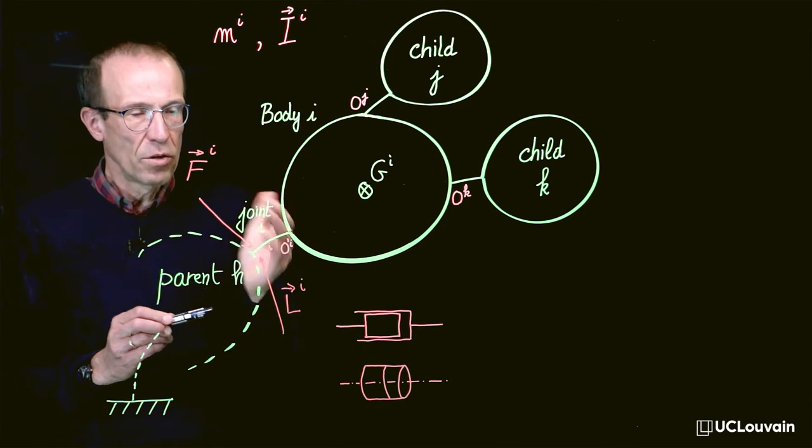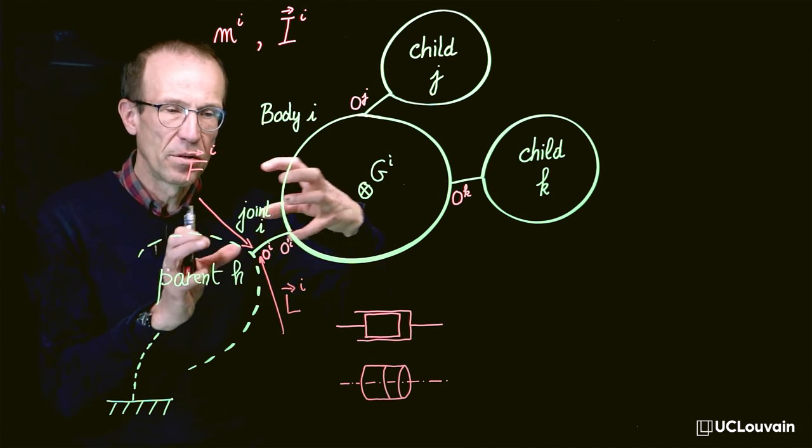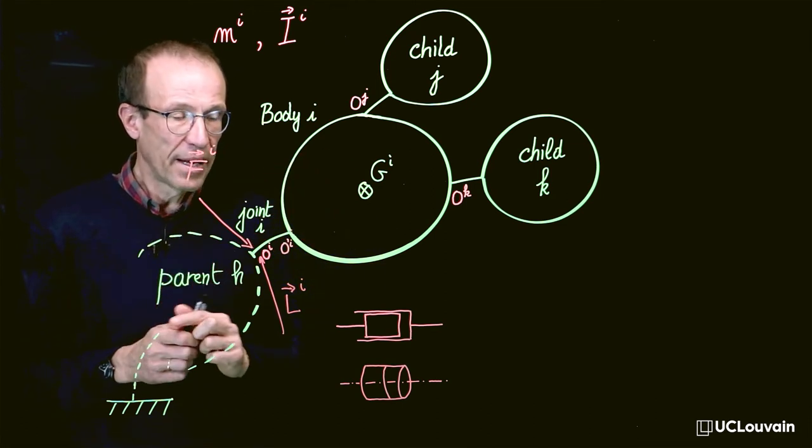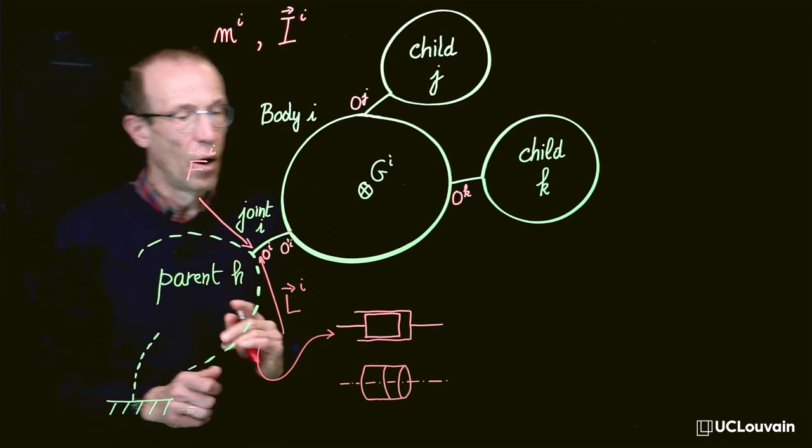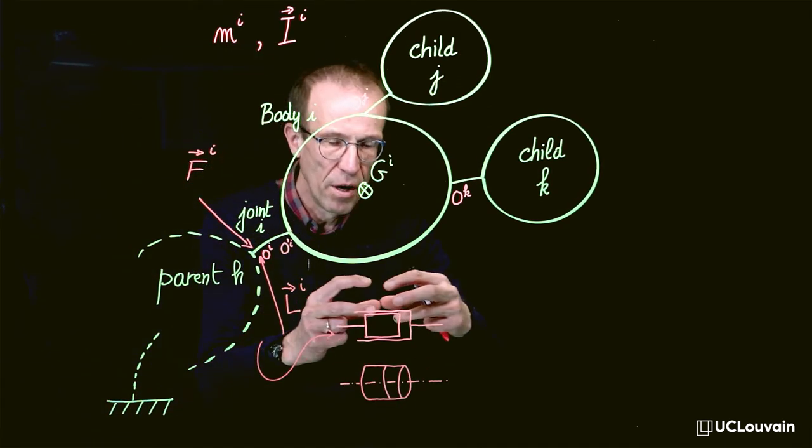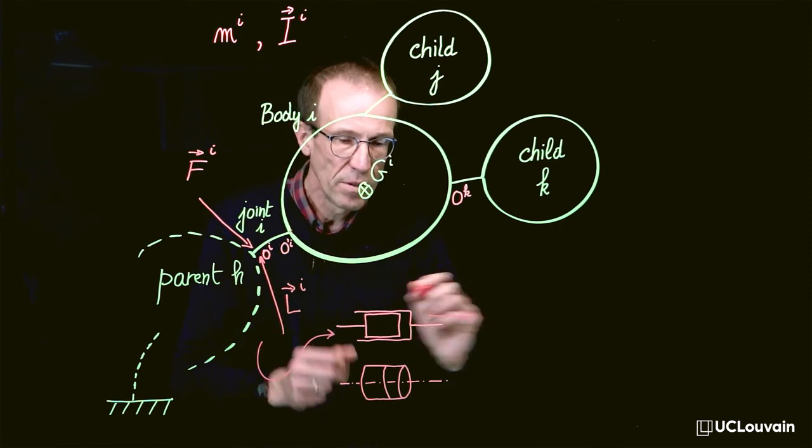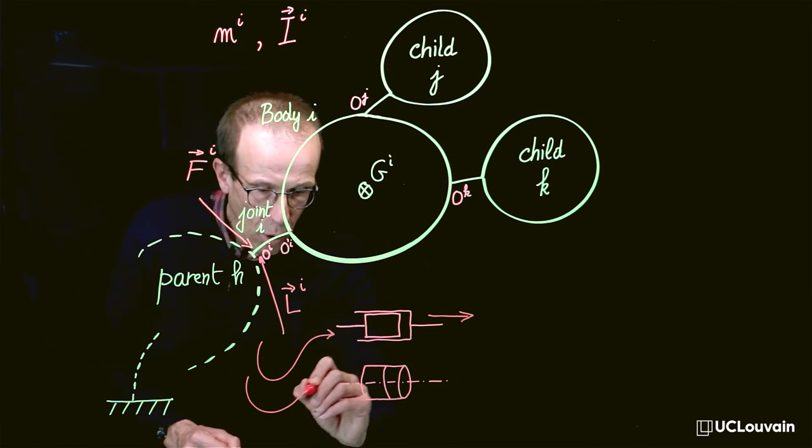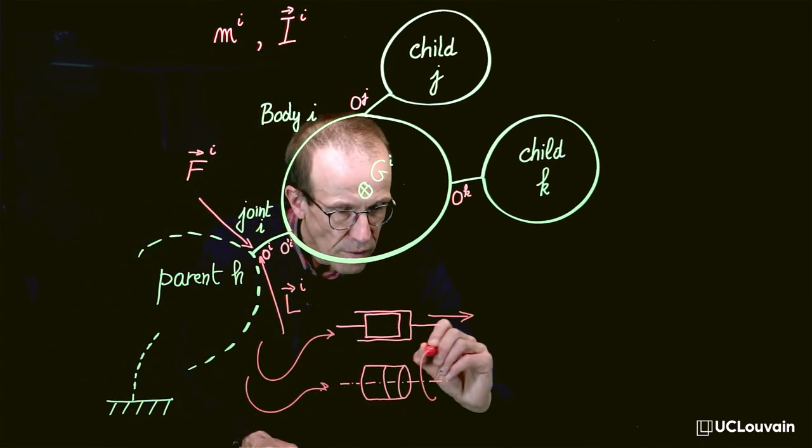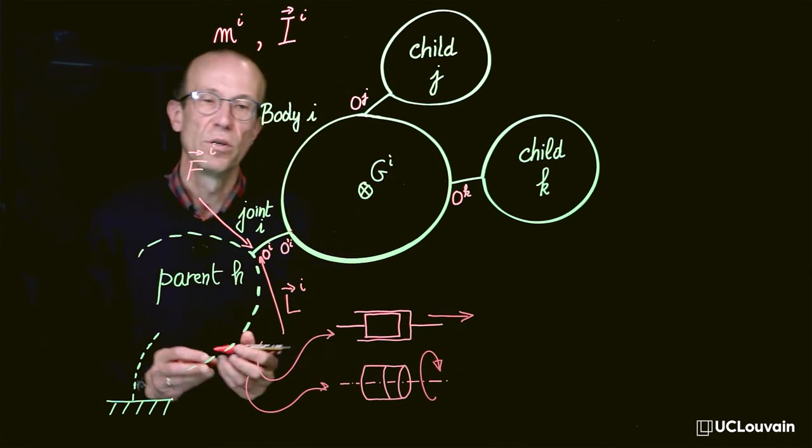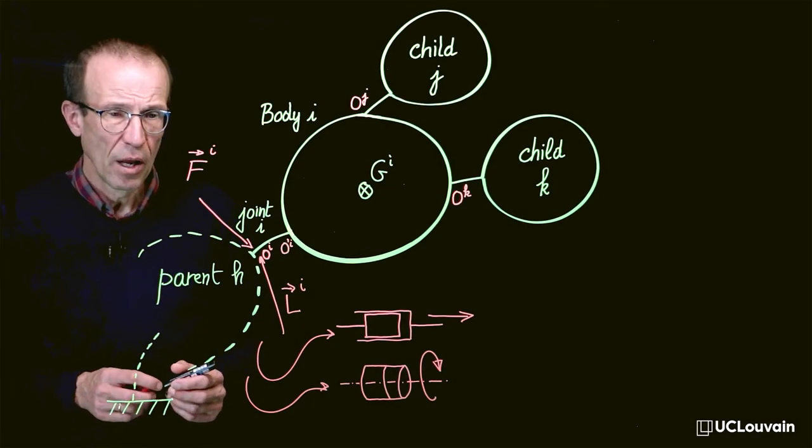Within a joint, motion can take place under the form of a relative displacement. They can be either a prismatic motion or a linear motion giving rise to a linear displacement, or it can be a revolute motion giving rise to a rotational motion between the bodies.